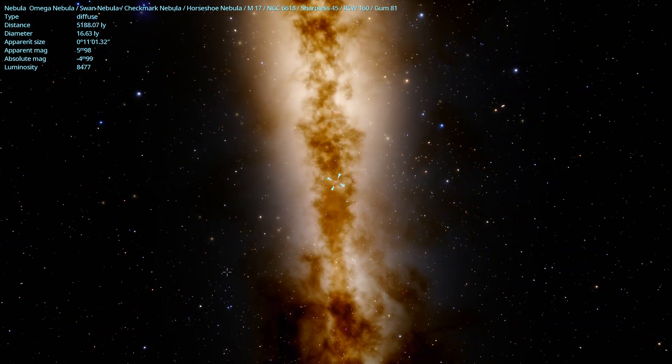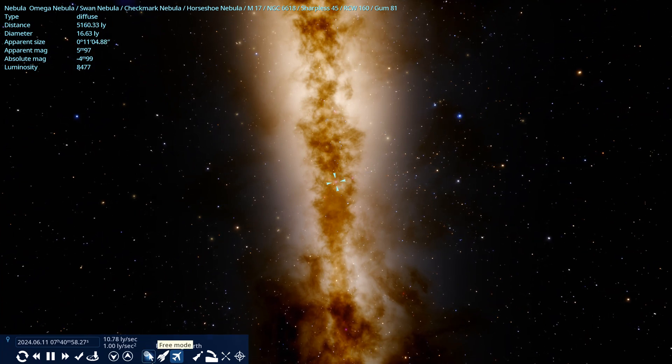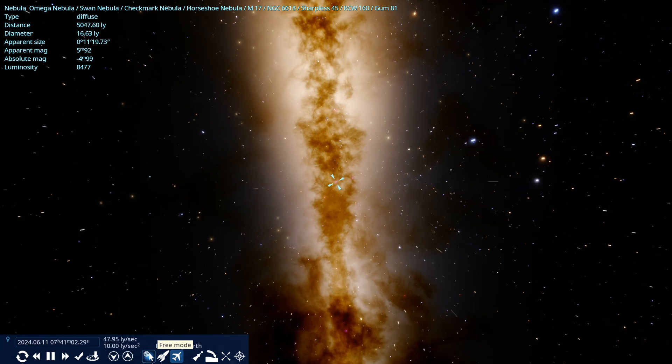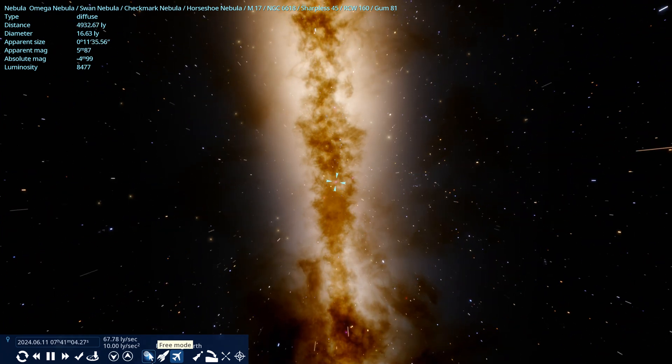Located in the Sagittarius constellation, the nebula lies around 5,000 light years away, so it will travel at 80 light years per second, arriving in just under a minute.